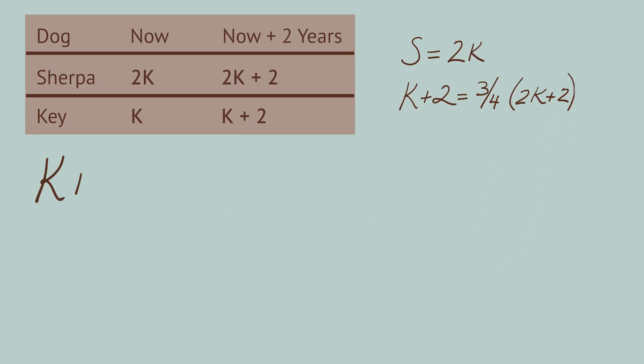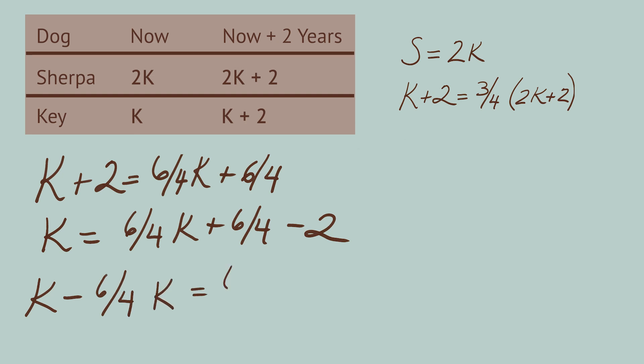Let's multiply that out and solve for K. K plus 2 equals 6 over 4K plus 6 over 4. K equals 6 over 4K plus 6 over 4 minus 2. K minus 6 over 4K equals 6 over 4 minus 2. Let's multiply both sides of this equation by 4 to get rid of the fractions.